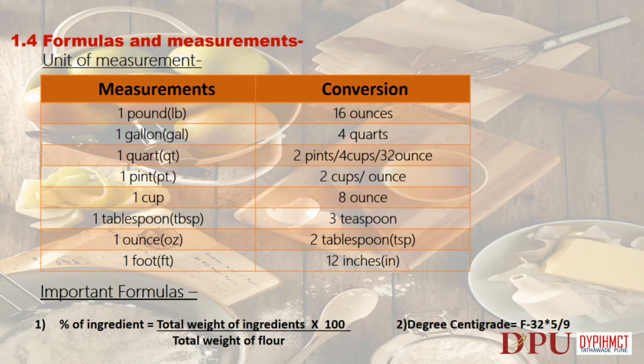1.4 Formulas and Measurements. Unit of measurement: the table shows measured units, conversions and equivalents, and their abbreviations. Important formulas: (1) % of ingredient = (total weight of ingredient × 100) ÷ total weight of flour. (2) Degrees Centigrade = (Fahrenheit − 32) × 5 ÷ 9.